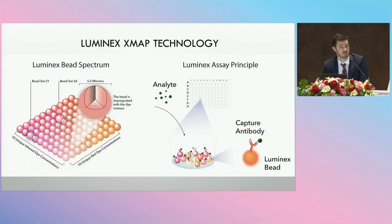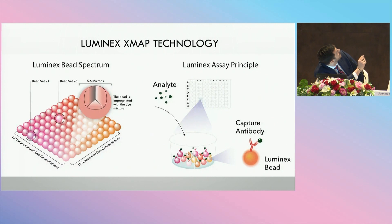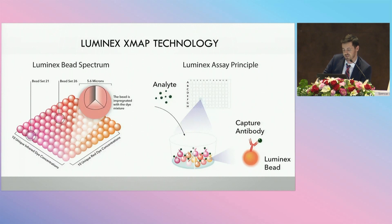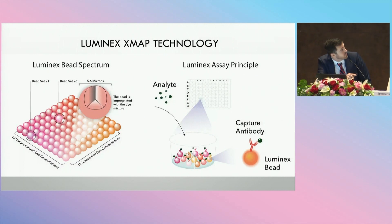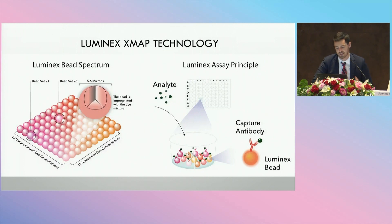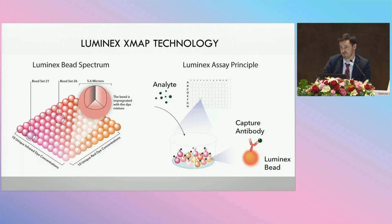The solution is Luminex xMAP technology. These are microsphere beads, about 5 micrometers in diameter. On one axis, you have 10 unique infrared dye concentrations, and on the other axis, visible light dye concentrations, giving you 100 different bead regions — and thus 100 different antigens — that you can use in this assay. Instead of having one antigen per well per plate, you can put all of the beads in the same well and reduce the number of plates used.